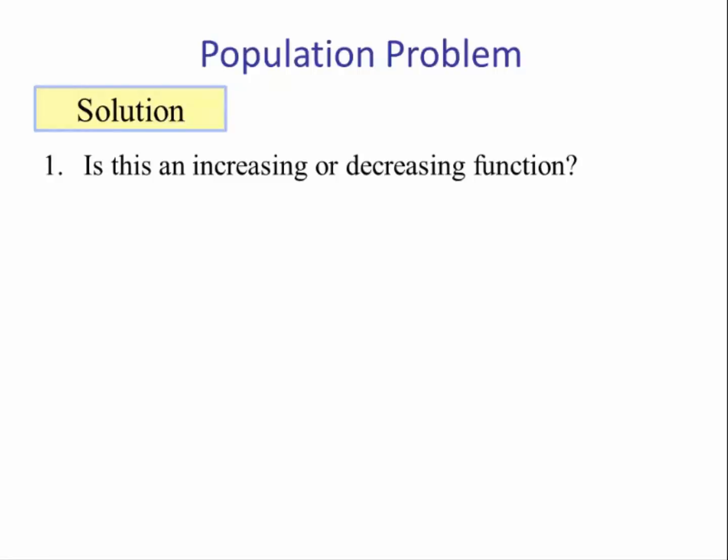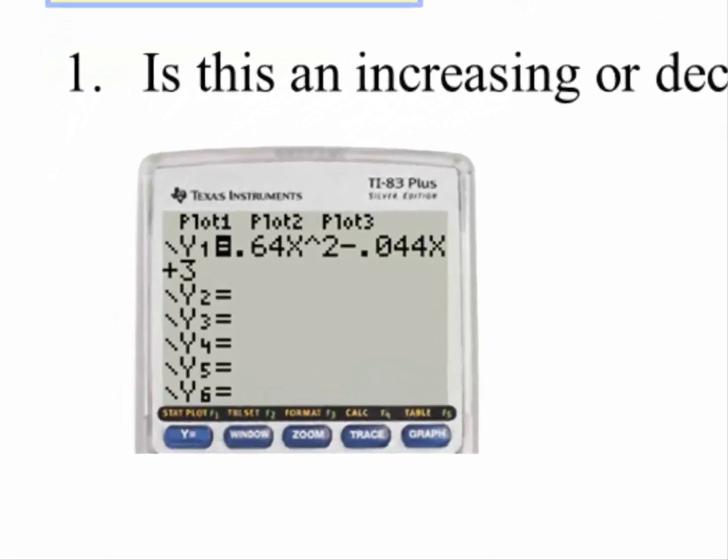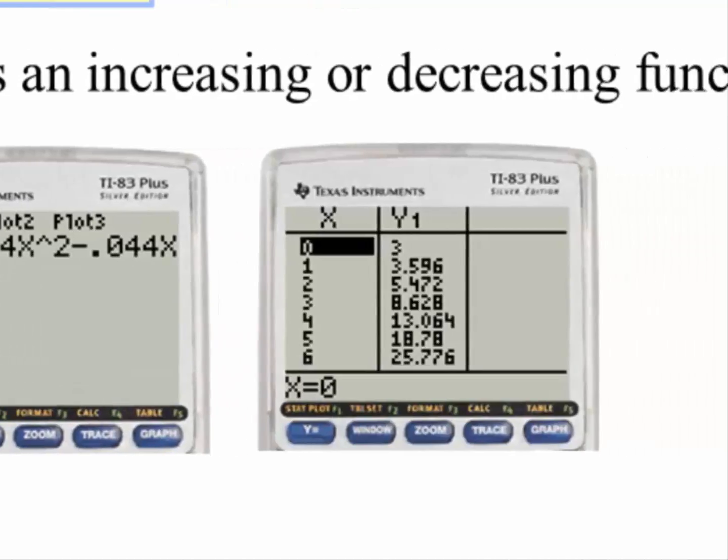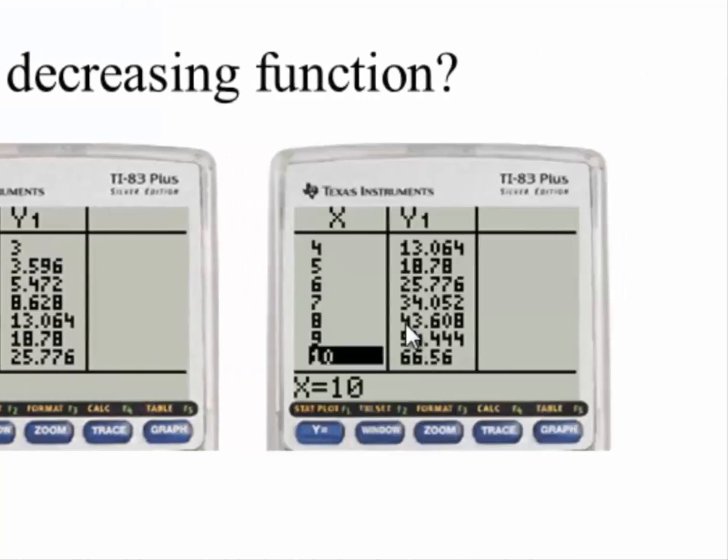Solution: number one, using our graphing calculator, we type in the model in y1. Using the table feature, we can see values of time and the corresponding population size according to the model. We want to use the domain from 0 to 10, so as x gets larger, y is increasing also, and it's increasing for the whole interval.